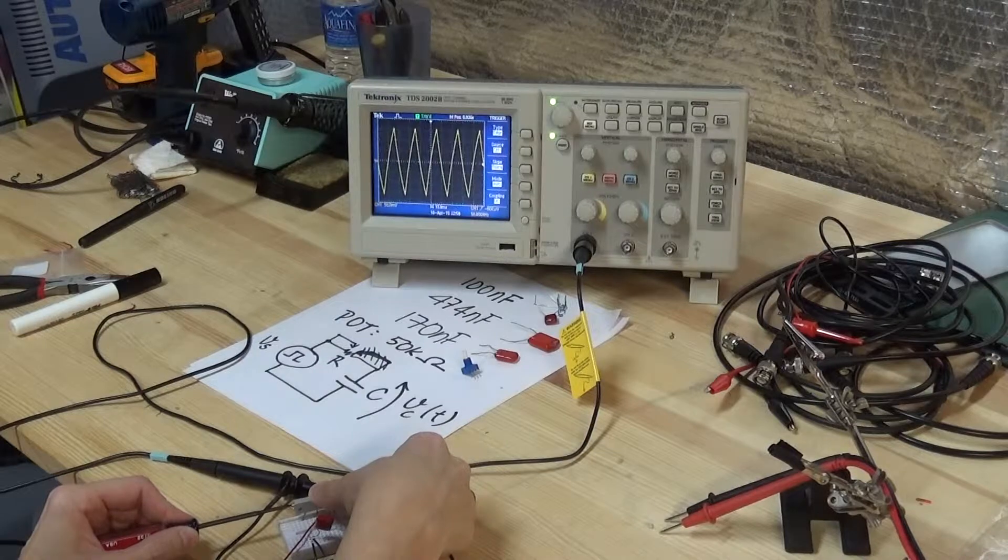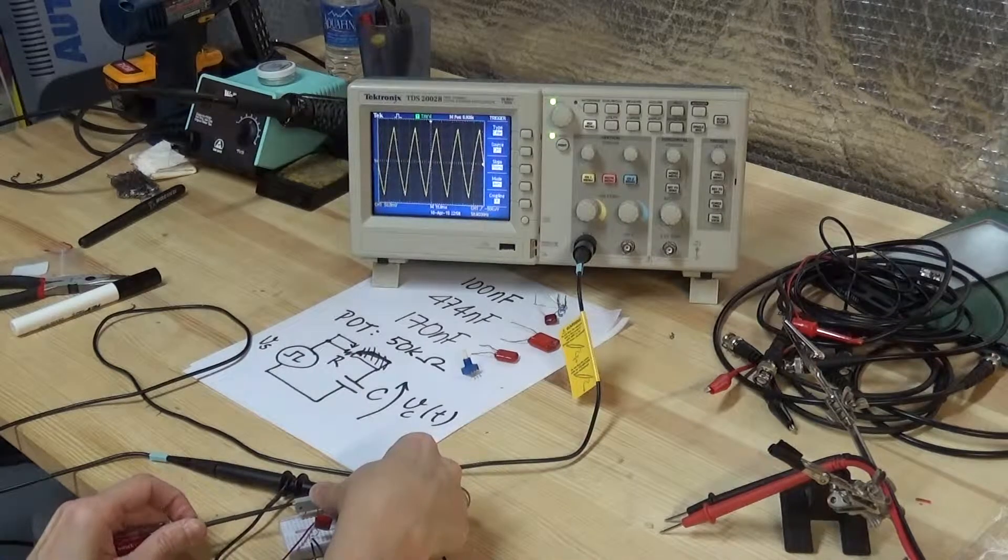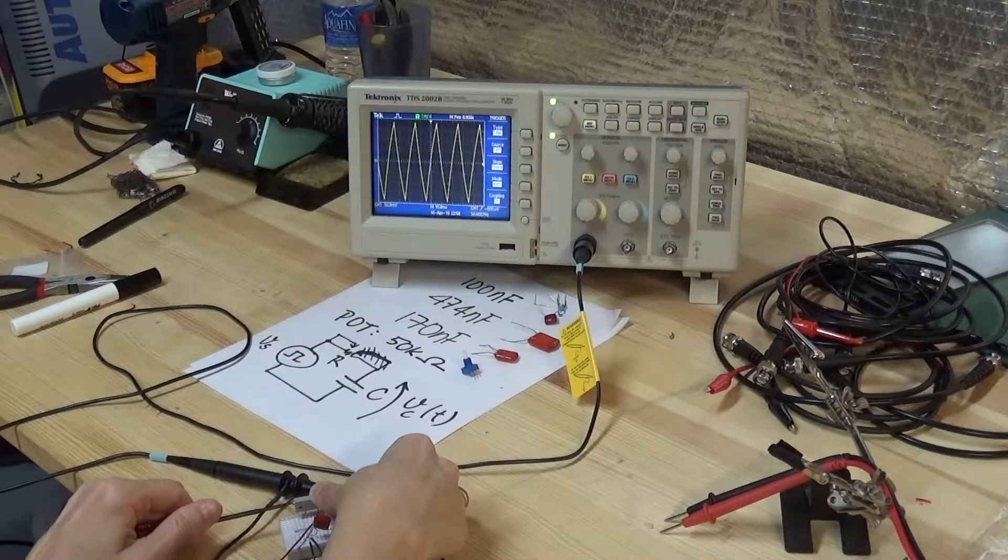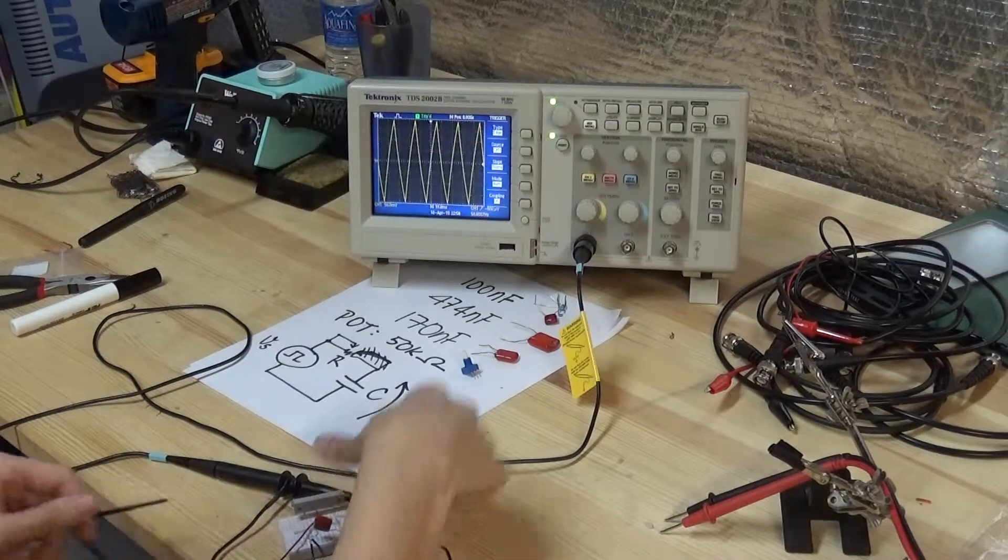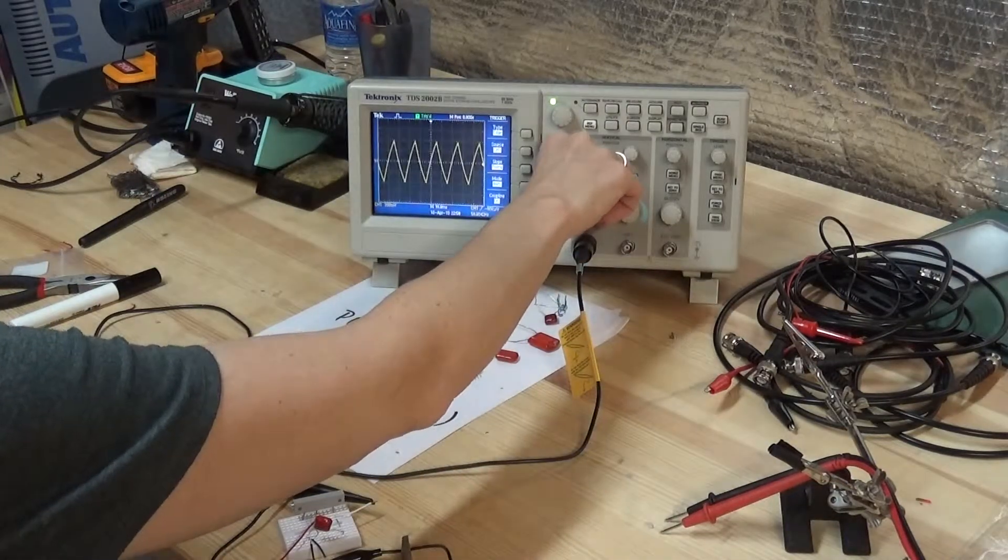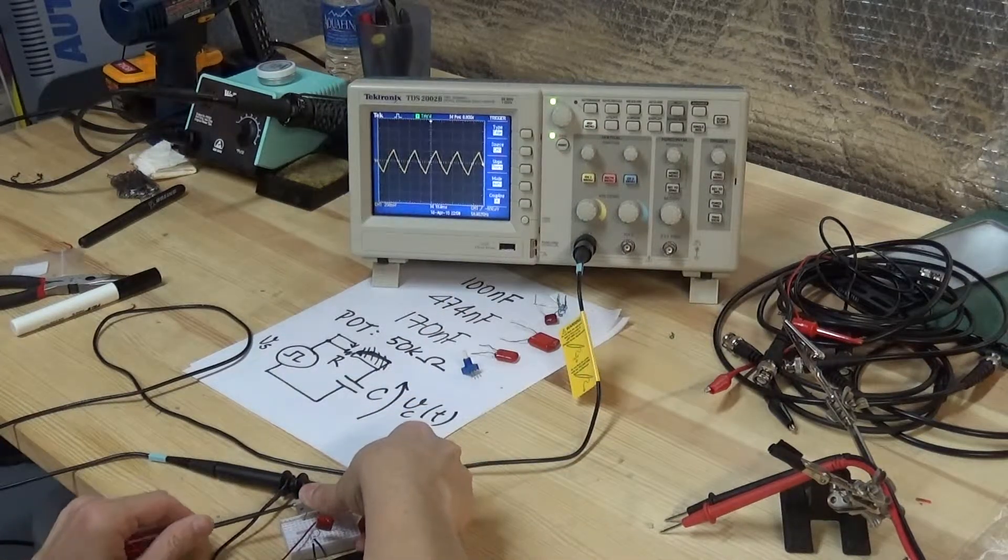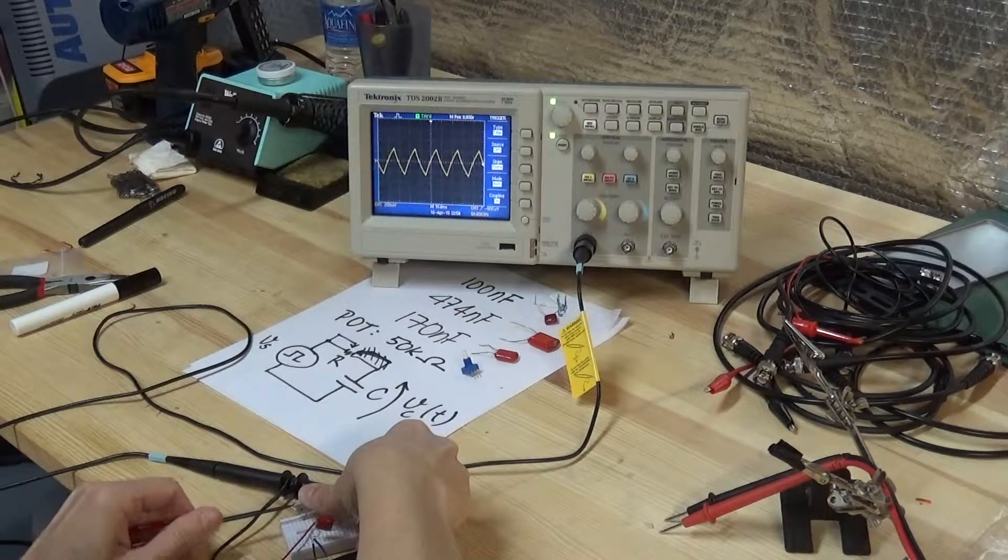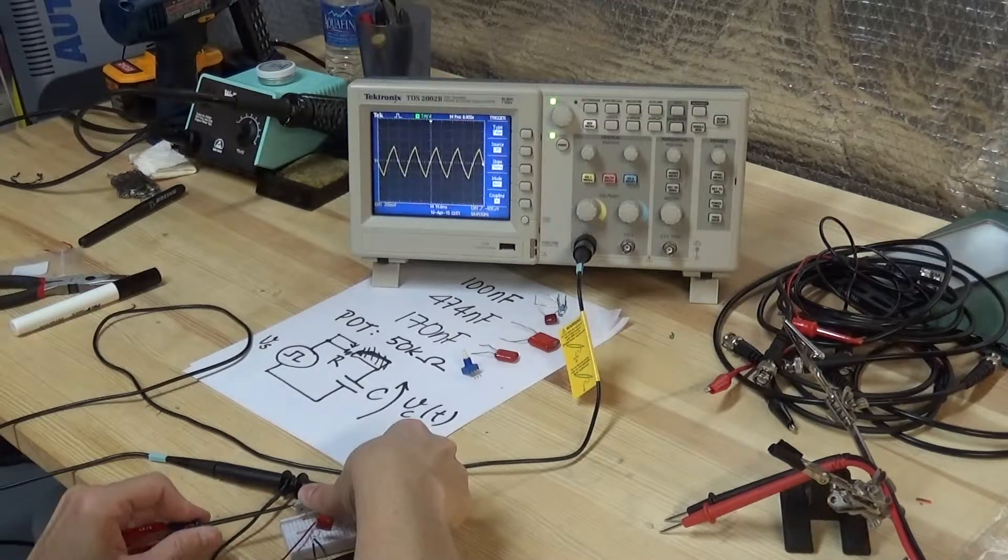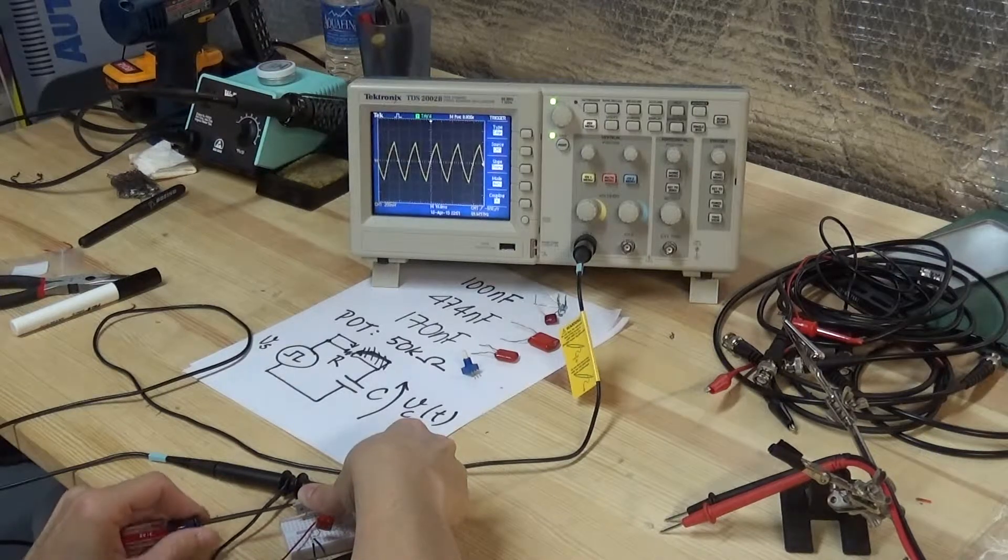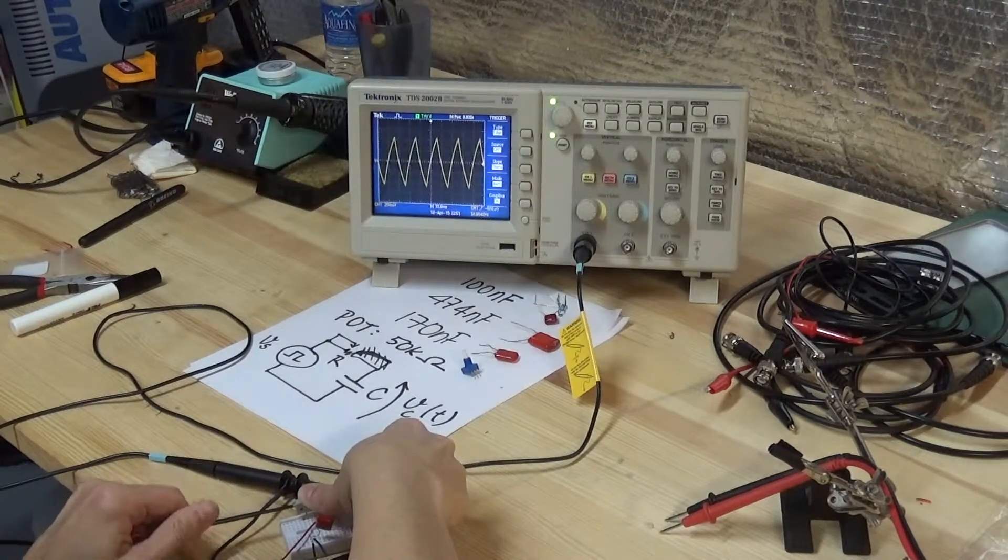...decreasing the time constant. So there's more time for the exponential to go there, to go to these higher voltages. So you're going to see that it's becoming less and less triangular, and hopefully more and more like the exponential.